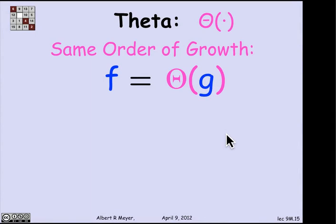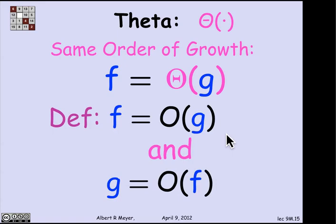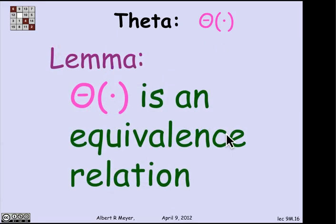The final relation of the four is called theta, or same order of growth. The definition of f is theta of g is simply that f is O of g, and g is O of f. It's easy to show from the definition that theta is an equivalence relation.